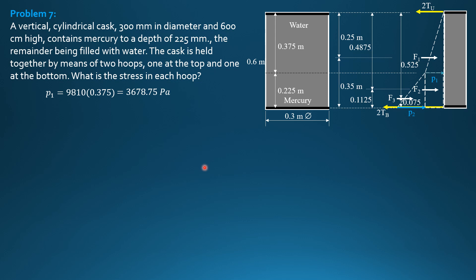But you can also express the answer in kilonewtons if you want, or kilopascals for pressure. So P sub 2, because this is mercury, 13.6 times 9,810 times depth 0.225. So P sub 2 is equal to 30,018.6 Pascals.